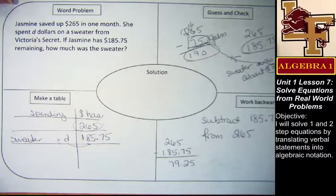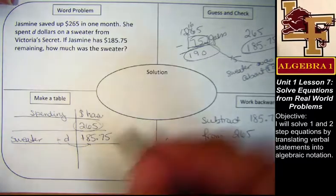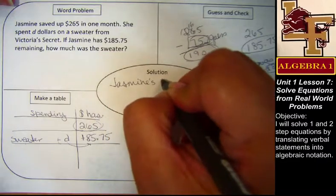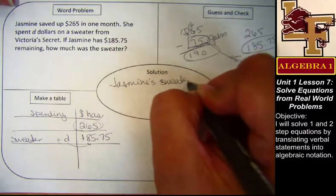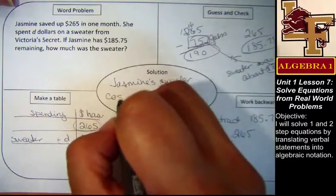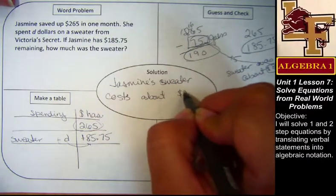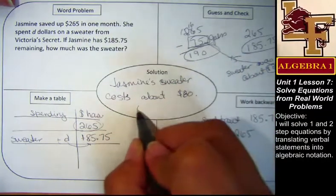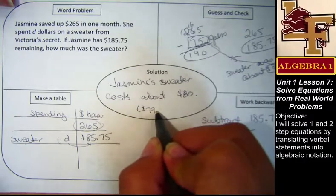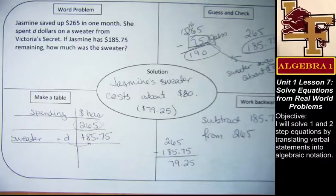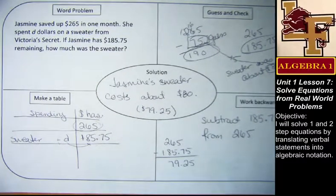Does someone want to suggest a sentence? Jasmine's sweater costs about $80. Okay. Jasmine's sweater costs about $80. And I'm going to put in parentheses the actual amount that we had calculated on the work backwards.